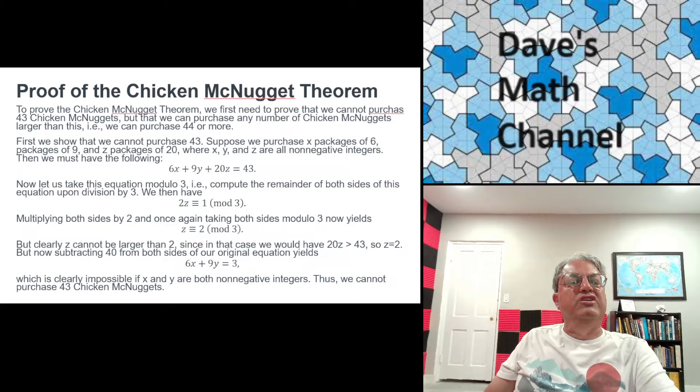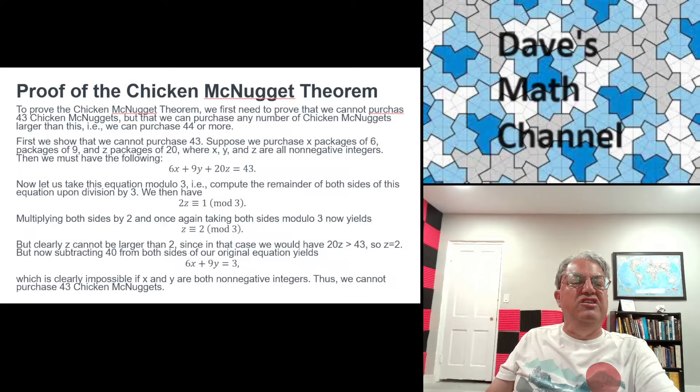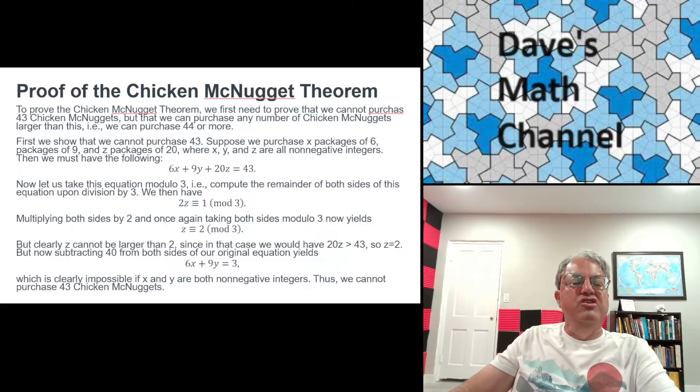Well, Z can't be very big, right? Because Z is the number of 20 packs you're buying. And if you're buying 43 McNuggets, you can't buy more than 2, right? Two 20 packs because otherwise you're going to have too many. So Z has to be equal to 2. It's the only non-negative integer that gives you a remainder of 2 when you divide by 3. So Z is 2.